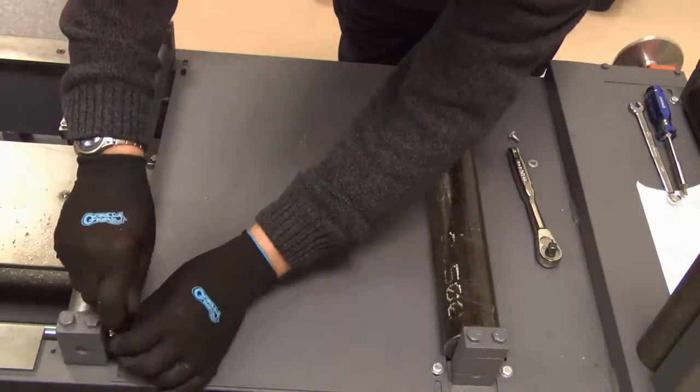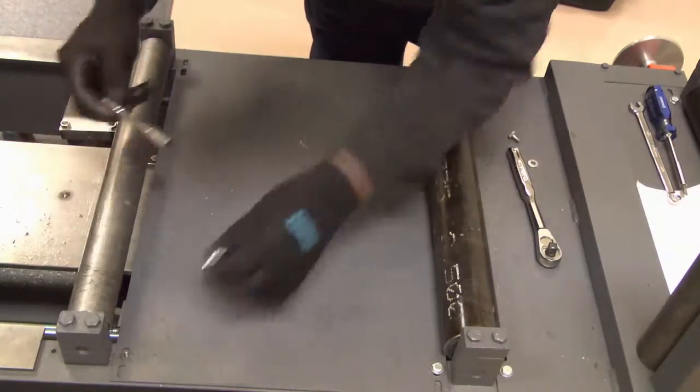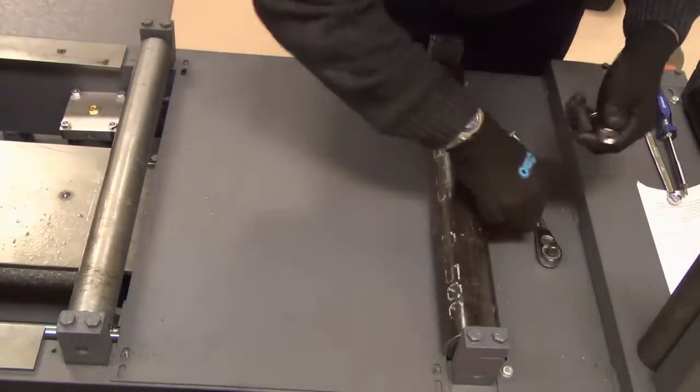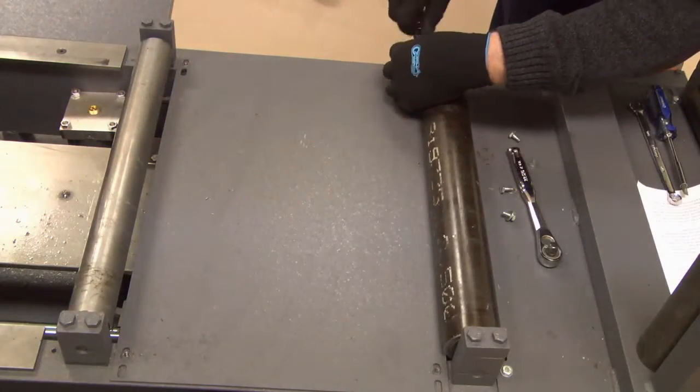To access the feed forward switch, the front inspection plate on the feed table must be removed using a 7/16 inch socket head to remove the 4 quarter-inch bolts.